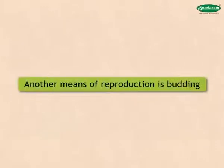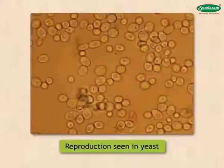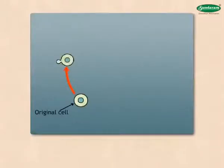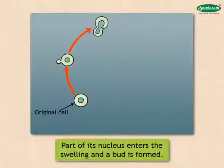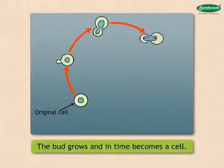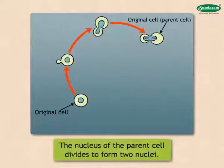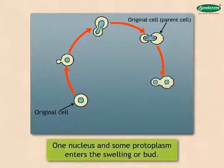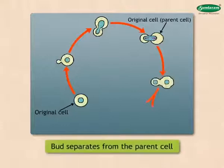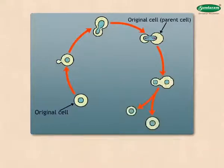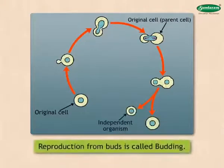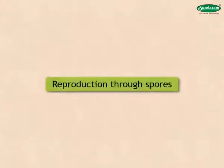Another means of reproduction is budding, seen in living things like yeast. The original cell gets a little swelling, and soon a part of its nucleus enters the swelling and a bud is formed. The bud grows and in time becomes a cell. The nucleus of the parent cell divides to form two nuclei; one nucleus and some protoplasm enter the swelling or bud. Later, this bud separates from the parent cell and becomes an independent organism. Such reproduction from buds is called budding.